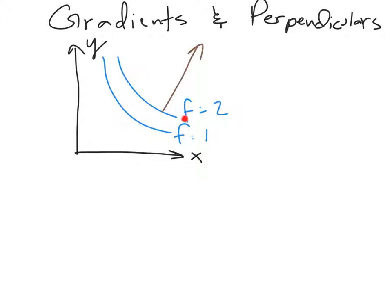When we have a contour line of a function, the gradient is locally perpendicular to a tangent of that contour line. That's a really convenient fact — it means that we can take a gradient to find a perpendicular to a curve, so long as we find a way to write that curve as a contour of some function.